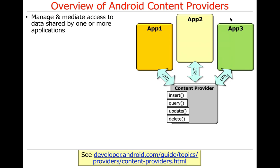Content providers are typically used to manage access to structured storage by one or more applications. Often you want to create data that multiple applications will access and use in various ways. Sometimes you just want one application to use it, but still manage it in a consistent and clean way. The basic format of a content provider has a bunch of methods, and there's a way to identify it by various uniform resource identifiers.